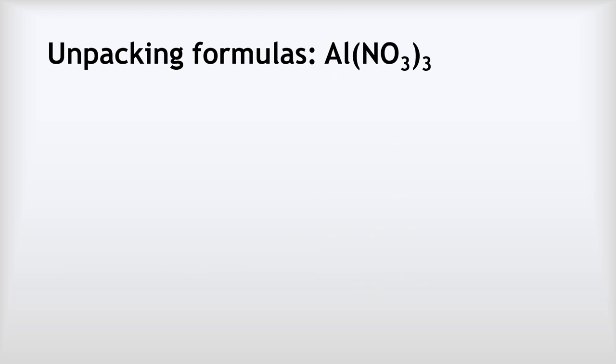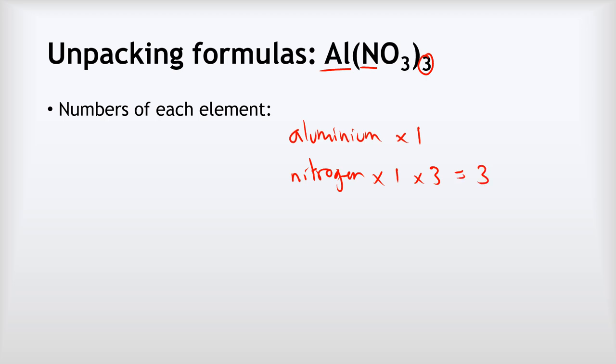Another harder one, aluminum nitrate. Again, we've got some brackets. So Al is aluminum. We've just got one of those because there's no number next to it. Nitrogen is the capital N there. Now this is where we're going to think about the brackets again. There's only one nitrogen in the brackets, but because of the three outside the brackets, we're going to multiply it by three. That gives us three nitrogens in total. What about O? O is oxygen. In the brackets, we've got that three there. So there are three oxygens in the brackets. But because of the second three outside the brackets, we multiply it by three to give us a total of nine oxygens, which means that if we're adding up the total number of atoms, it's going to be 1 plus 3 plus 9 to give us a total of 13 atoms in our aluminum nitrate.